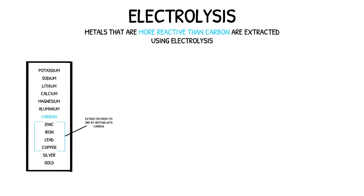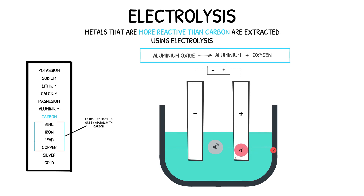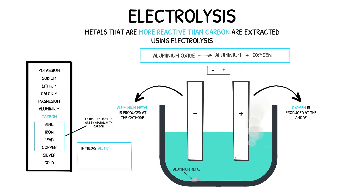The metal ions are attracted to the electrode of the opposite charge, where they gain electrons and return to neutral metal atoms. For example, the electrolysis of molten aluminium oxide yields aluminium metal and oxygen gas. The molten aluminium oxide splits into aluminium ions and oxygen ions. The oxygen ions are attracted to the positive electrode where they lose two electrons and discharge as oxygen gas. The aluminium ions are attracted to the negative electrode where they gain three electrons and deposit as pure aluminium metal.